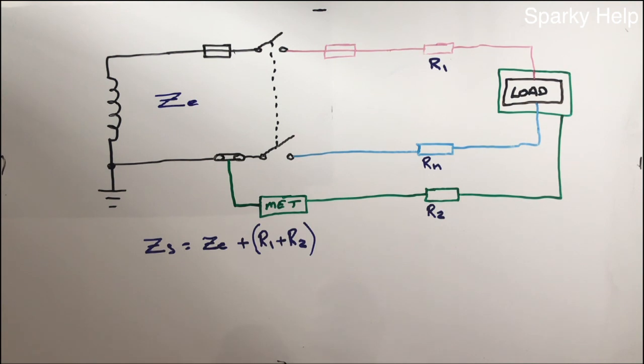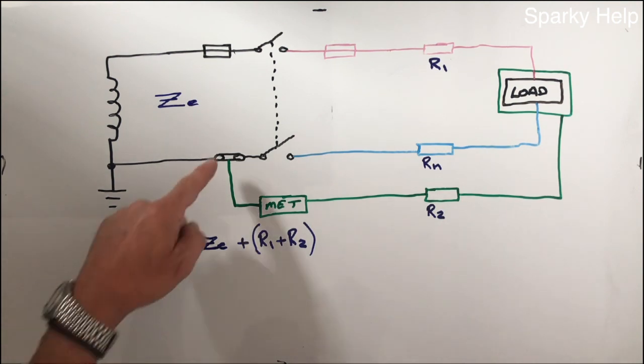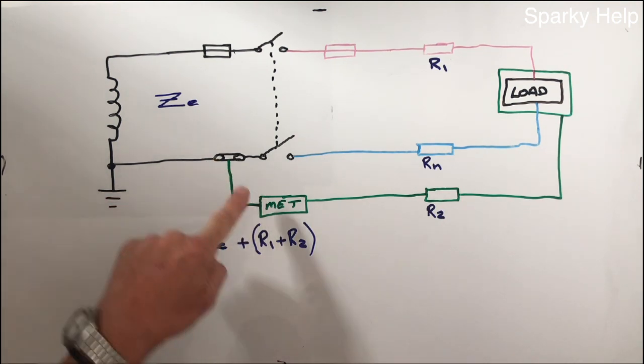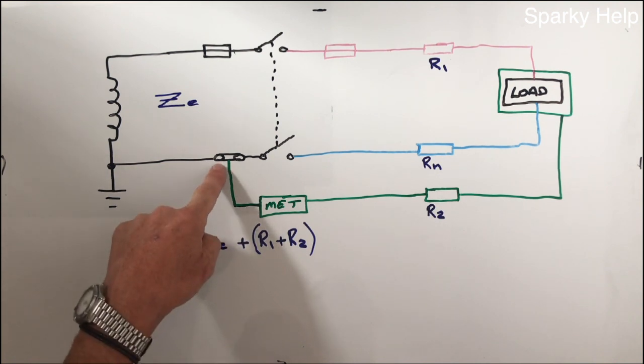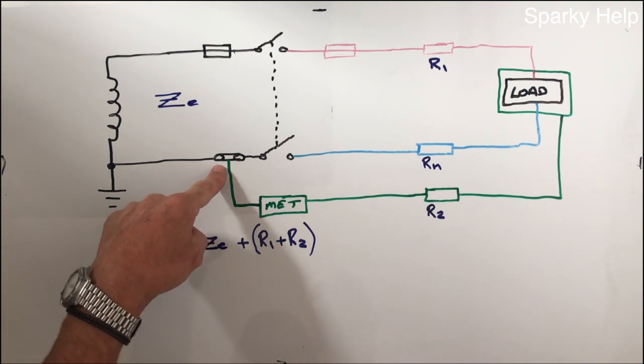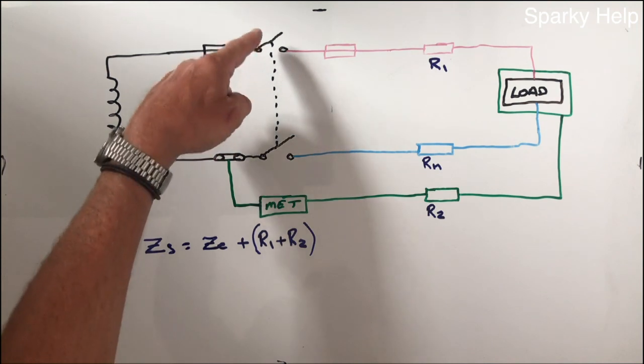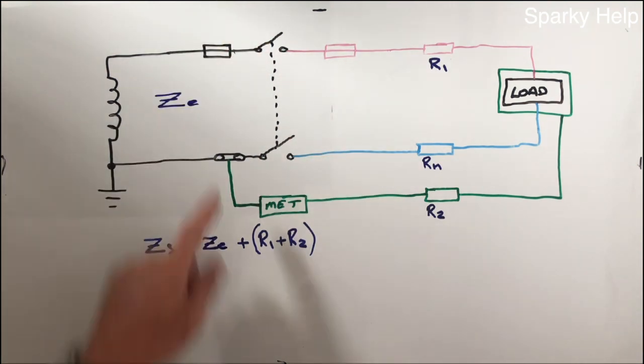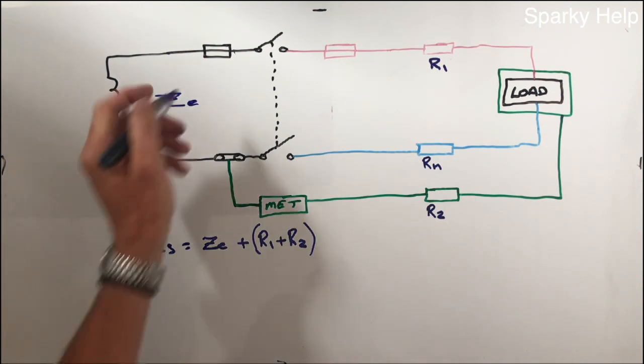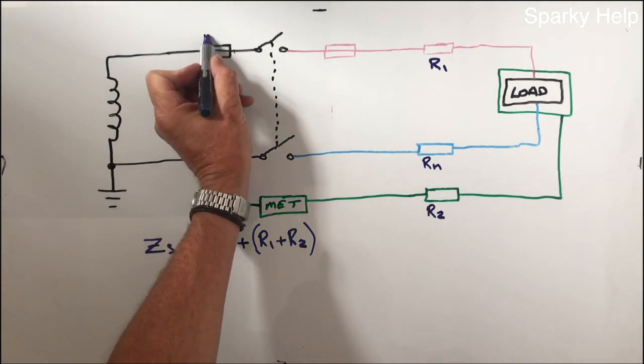So this particular circuit is a TNCS. As we can see, the earthing conductor comes out of the neutral link, which is the service cut-out, a double pole switch, and our service fuse which is typically 100A for normal domestic supply.